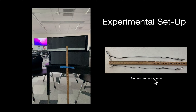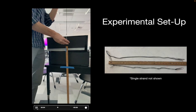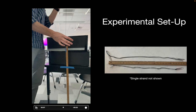One group might have a single strand, another a double strand, and another a triple strand. That just changes how strong those rubber bands are, allowing us to compare later. For our experimental setup, we're going to drop a mass from the starting height at the top, which is at one meter, and let it fall down to find the lowest point that it gets to.